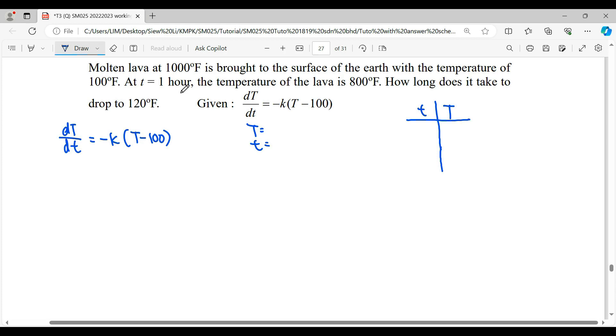Given here, your model of Newton cooling formula is dT/dt equals negative K times T minus 100. Your variable here is small t and big T. Small t will be represented by your quantity of time, the unit used here is hour. And then for the big T here, that will be your temperature.